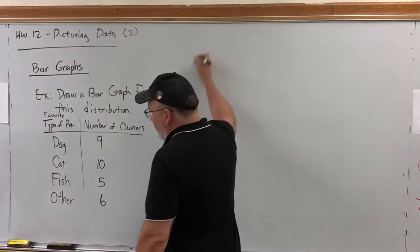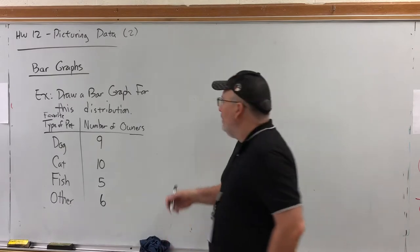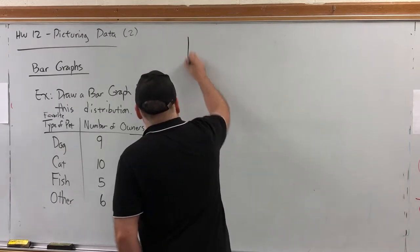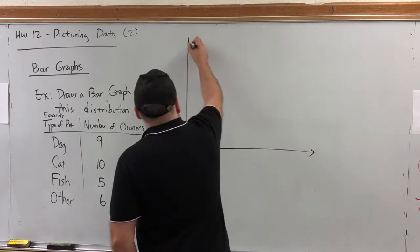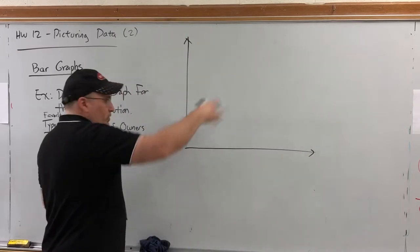There's two types of bar graphs. There's a vertical bar graph and a horizontal bar graph. I think the ones in the homework are mostly vertical bar graphs, although it would be easy to rotate it and make it a horizontal bar graph.